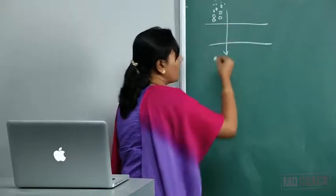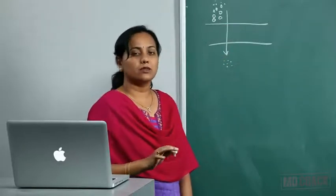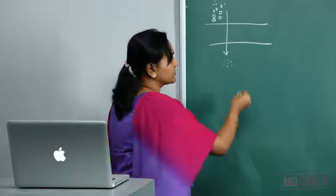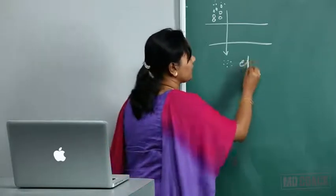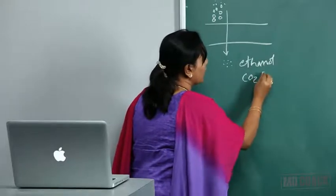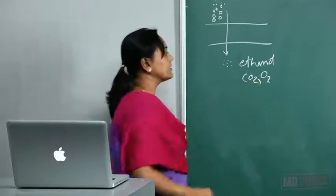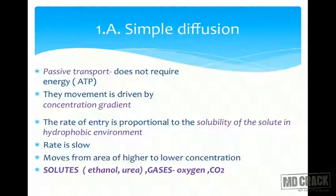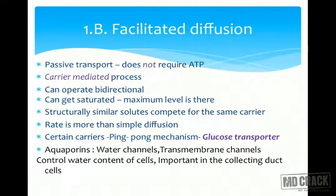The rate of simple diffusion is very slow. Substances transported this way include ethanol, alcohol, carbon dioxide, oxygen, and other gases. These move from a higher concentration to a lower concentration. The next type is facilitated diffusion.